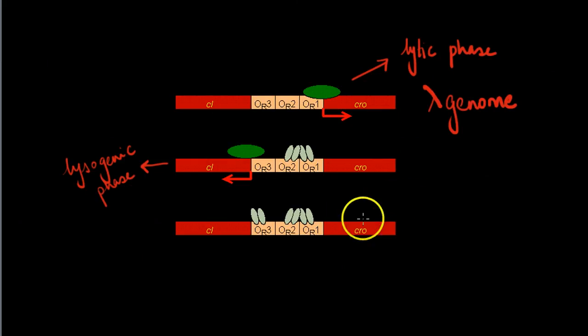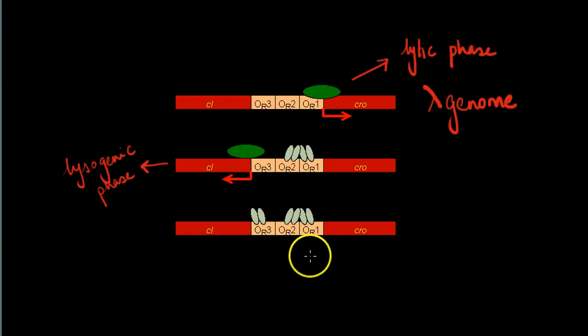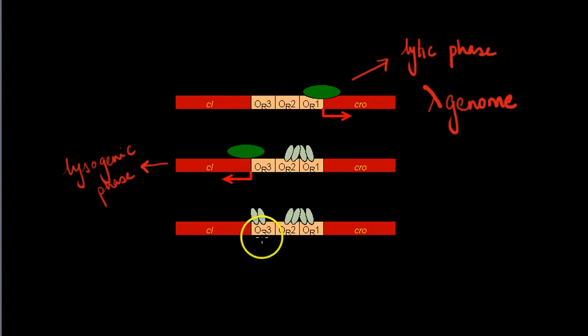At really high concentrations of the CI repressor protein, in addition to OR1 and OR2, it is also going to bind to the OR3 domain.